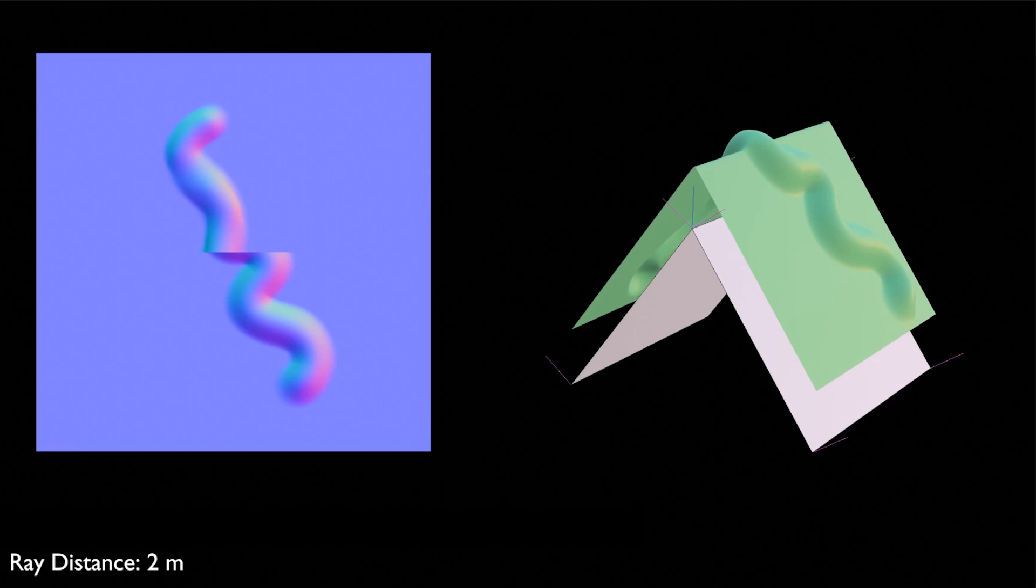In this example, you can see we get a seam in the normal map, even though the sculpted details should flow continuously across the edge as seen here. This is because we are missing the top part of the high poly when projecting rays, because we follow these pink lines which represent the split normals. And because our model is shaded flat, the rays will go perpendicular to our low poly faces. And that's where smooth shading and cage enter into play.